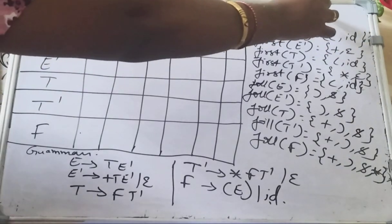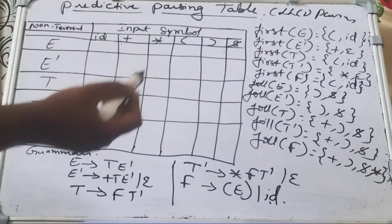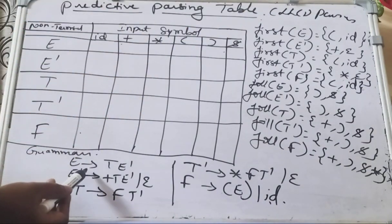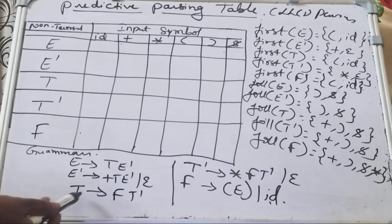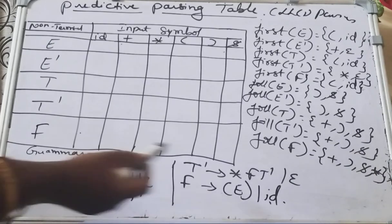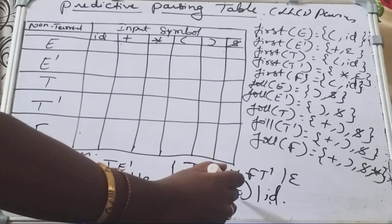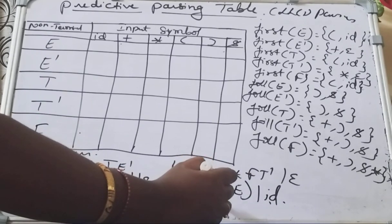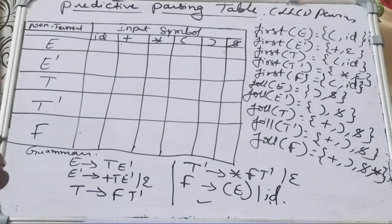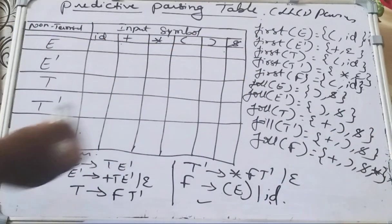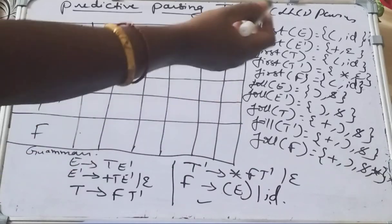We have to construct this parser. Here, for this grammar only: E derives T E', E' derives plus T E' or epsilon, T derives F T', T' derives star F T' or epsilon, F derives (E) or id. For this grammar we have already computed the FIRST and FOLLOW — please refer to my previous video. I have taken those values since my table is small.